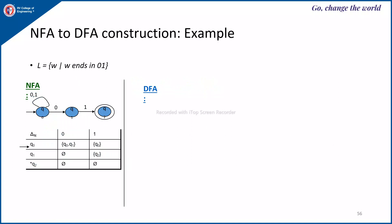Example: NFA to DFA construction for the language L equals W where W ends with 01. The NFA has Q0 on 0 going to Q1, Q1 on 1 going to Q2, and a self loop in Q0 on both 0 and 1. In the transition table: Q0 on 0 goes to Q0 or Q1, Q0 on 1 goes to Q0, Q1 on 0 is empty, Q1 on 1 goes to Q2, and Q2 has no transitions on 0 or 1.